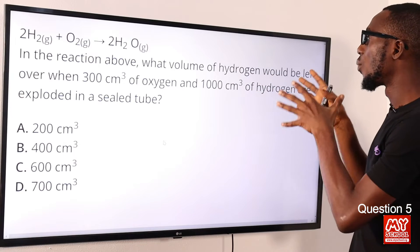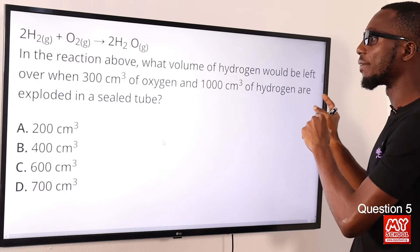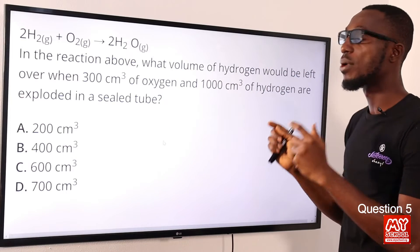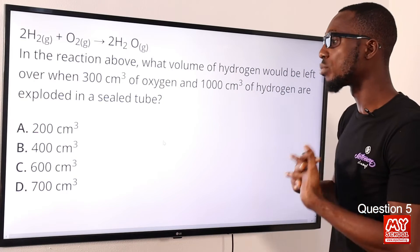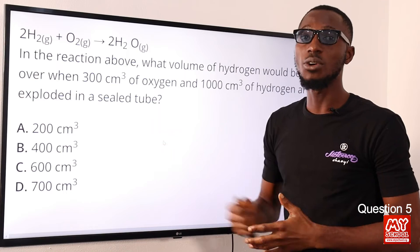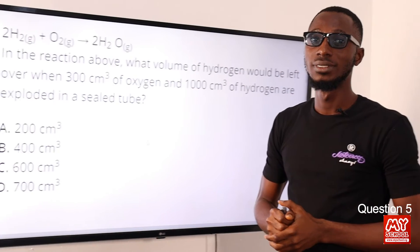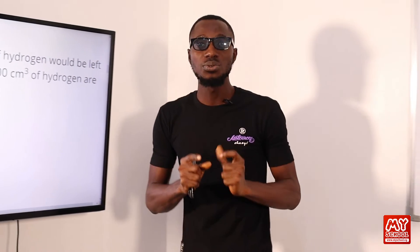If we take away the 600 used from the 1000 supplied, what we have left is 400 cm³. Let's go back to the question—what volume of hydrogen will be left when this explosion has taken place? We'll be left with 400 cm³, so option B is the correct option.